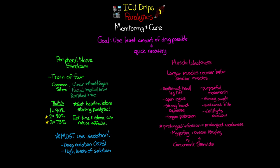Two final points for paralyzed patients: First, use prophylactic eye care or eye ointment. These patients cannot blink to refresh their eyes, so we apply ointment to keep their eyes moist and prevent corneal abrasions.